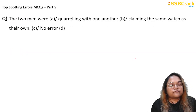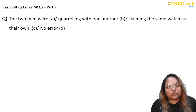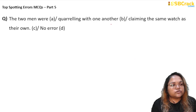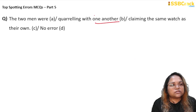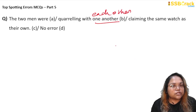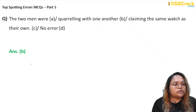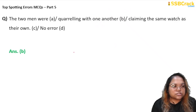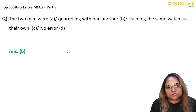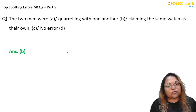Next question: 'The two men were quarrelling with one another, claiming the same watch as their own.' Here two people are quarrelling with each other. When exactly two people are involved, we do not say 'one another' — we say 'each other.' 'One another' is used when more than two people are involved. So the error is in part B — we will not use 'one another' but 'each other.' I hope all the questions have been quite clear to you.